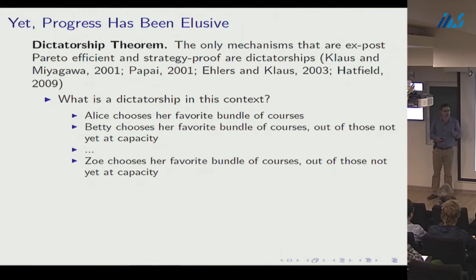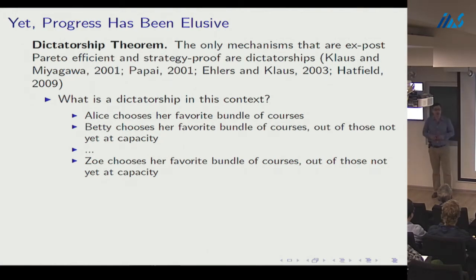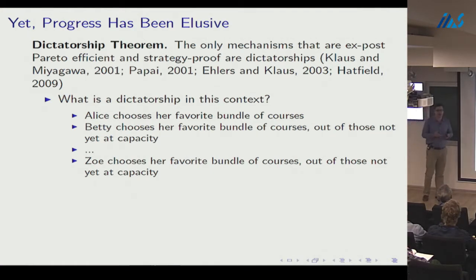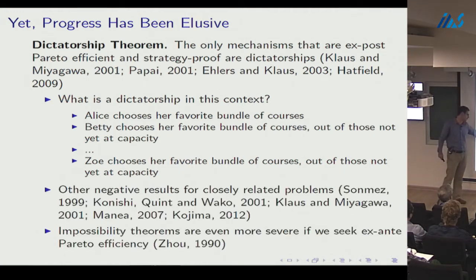The proposed mechanism will not be strategy-proof but will get around the dictatorship theorem with small approximations — small approximations to strategy-proofness and to ex post Pareto efficiency — while achieving approximate ex post fairness. As indivisibilities get small the solution becomes nearly perfect, but indivisibilities are a source of difficulty for both efficiency and fairness.